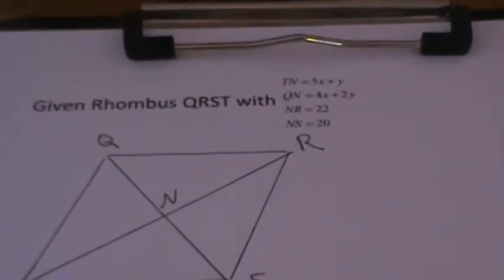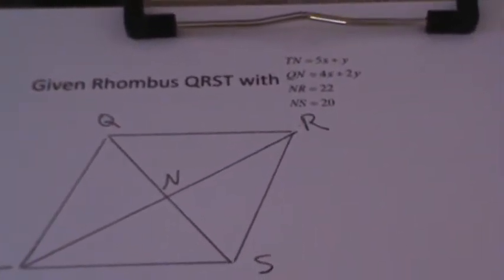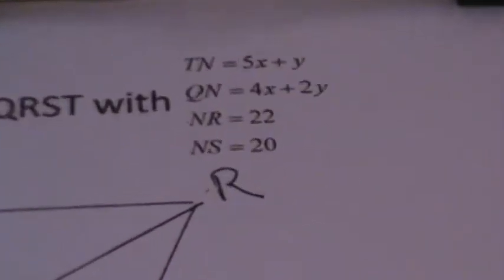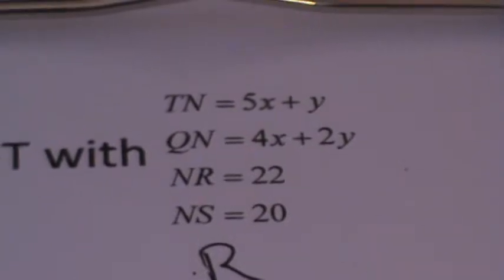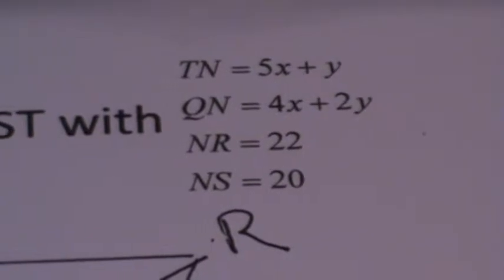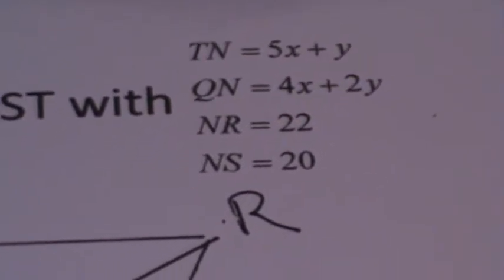Okay, the problem that we have here is we're going to be solving for x and y in a rhombus. We're told that the length of TN is equal to 5x plus y, QN is equal to 4x plus 2y, NR is equal to 22, and NS is equal to 20.